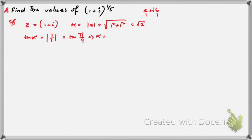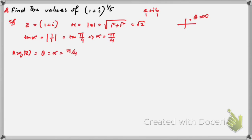Since the point (1, 1) is in the first quadrant, the argument θ = α = π/4. Therefore in polar form: z = r(cos θ + i sin θ) = √2 (cos(π/4) + i sin(π/4)).